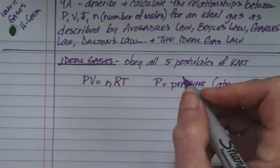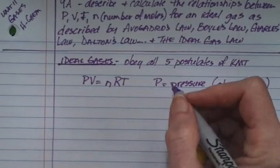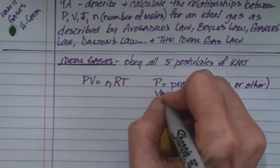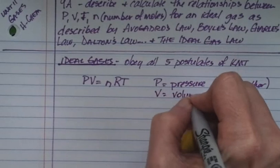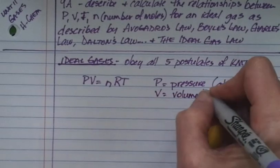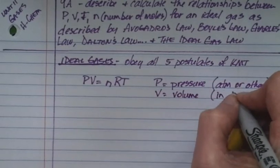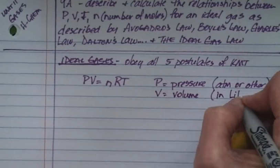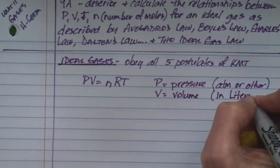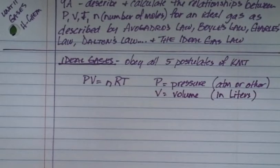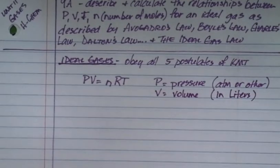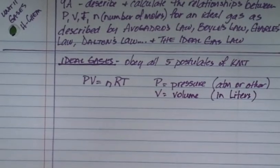When we talk about the ideal gases, the first equation is PV equals nRT. So P is pressure, in atmospheres — that's one of the ones I like to use a lot. V is volume, and it's in liters.